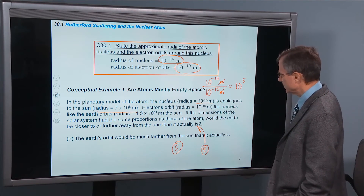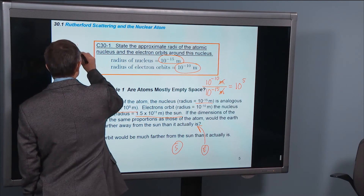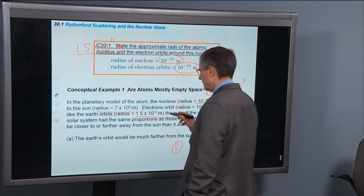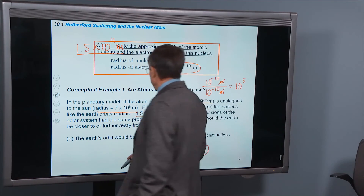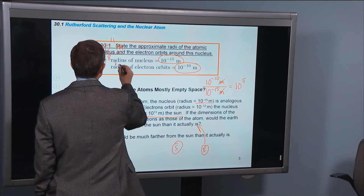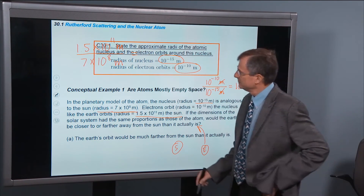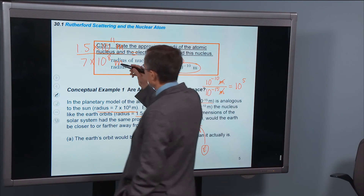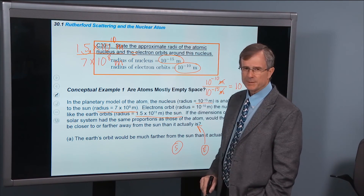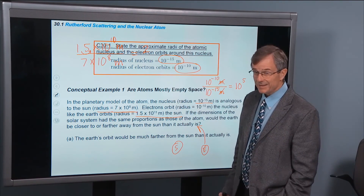For the solar system, the size of the earth's orbit is 1.5 times 10 to the 11 meters. That's the size of the earth's orbit divided by the radius of the sun, which is 7 times 10 to the 8 meters. The easiest way to do it is to treat this as 15 divided by 7, which is right around 2. And 10 to the 11 divided by 10 to the 8 is 10 squared. So the solar system ratio is about 2 times 10 squared.